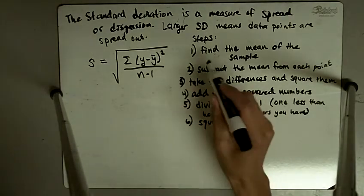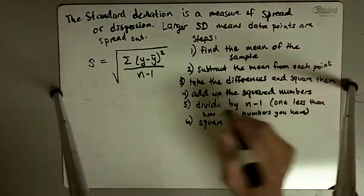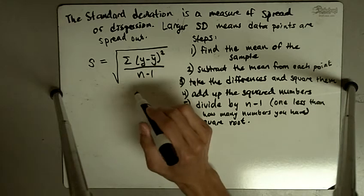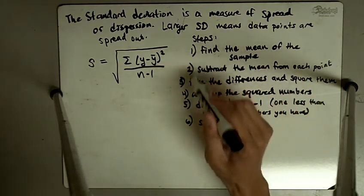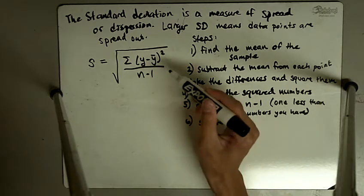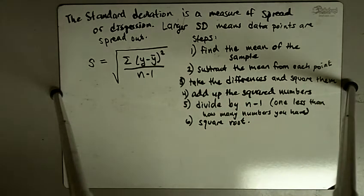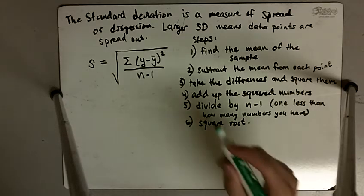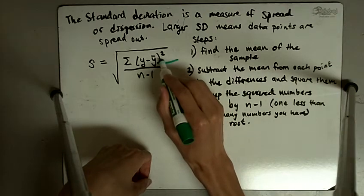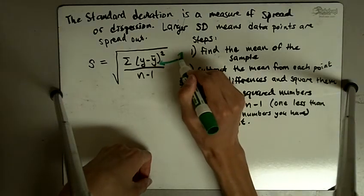So all six of these steps are contained in this formula. This formula is kind of a shorthand way of doing all six steps. So step 1, finding the mean of the sample is given by this thing that says y bar. That's step 1.